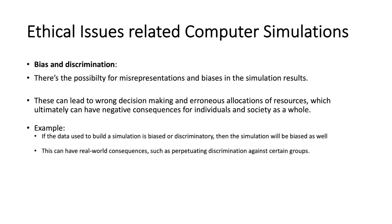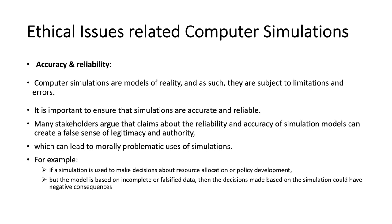The next ethical issue is bias and discrimination. There is a possibility for misrepresentations and biases in simulation results, which can lead to wrong decision-making and erroneous allocation of resources, ultimately having negative consequences for individuals and society as a whole. For example, if the data used to build a simulation model is biased or discriminatory, then the simulation will be biased as well, which can perpetuate discrimination against certain groups of people.